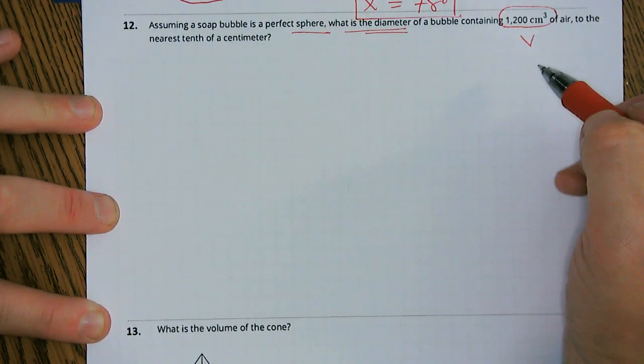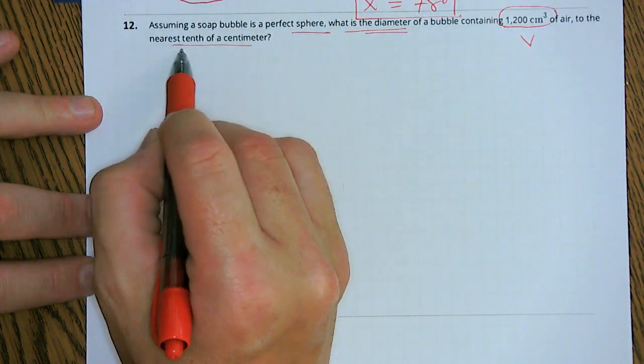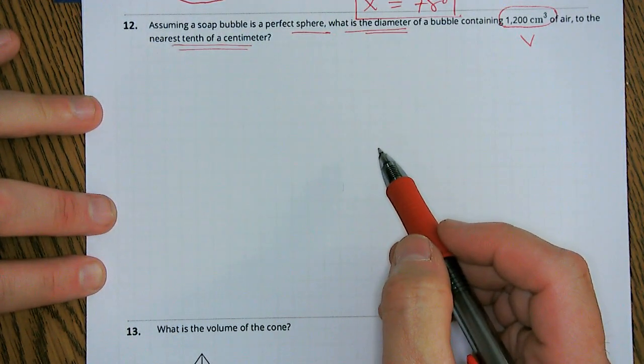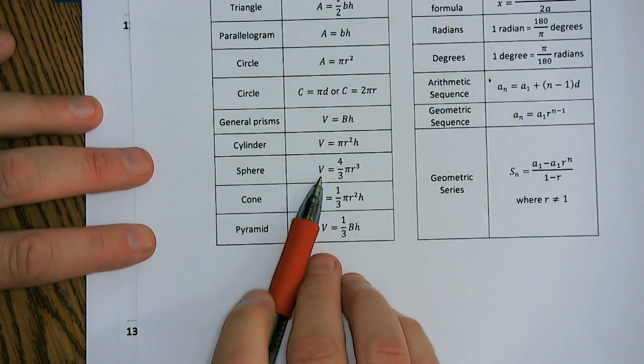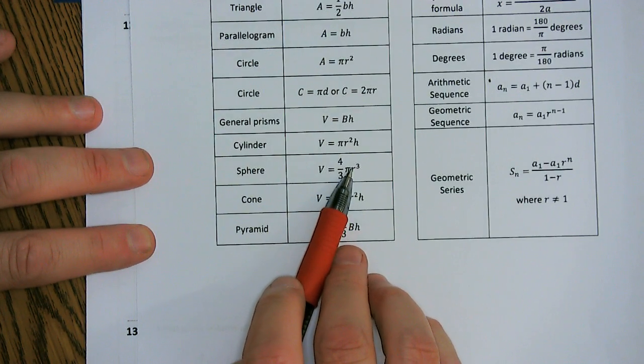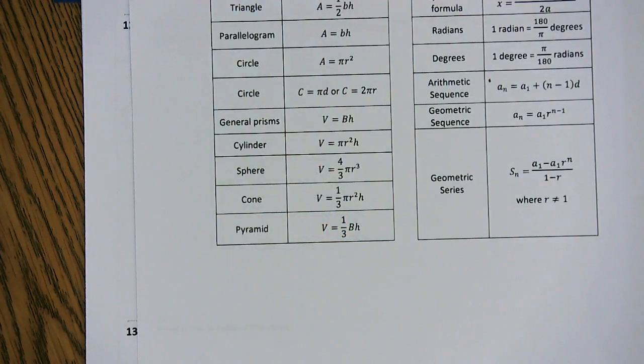This is a volume, and we're going to answer it to the nearest tenth of a centimeter. All right, so for a sphere, we've got to go back to our formulas for a sphere. The formula for a sphere is four-thirds pi r cubed. So we need the radius here.